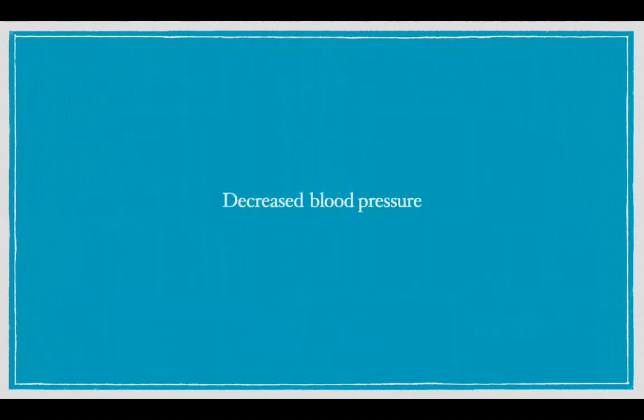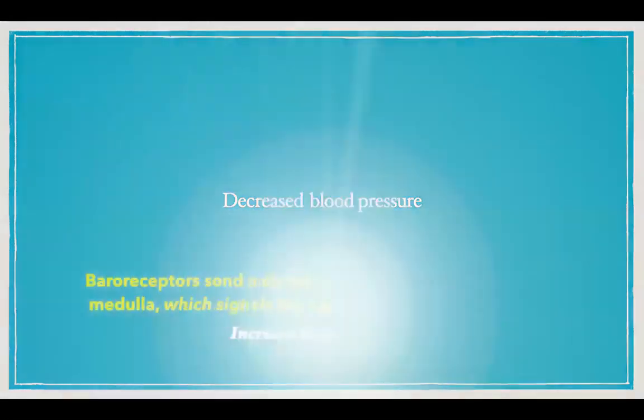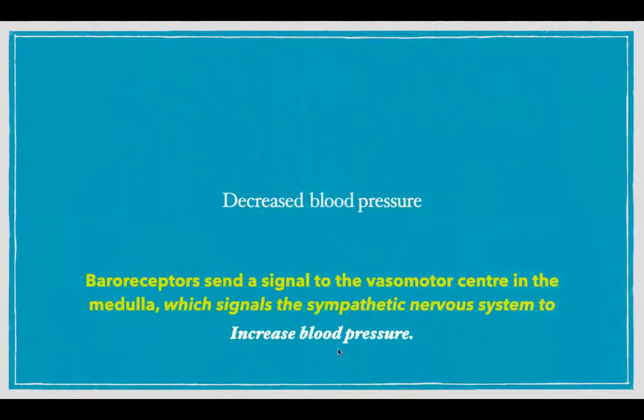When the blood pressure decreases, the baroreceptors send a signal to the nucleus tractus solitarius telling it that the blood pressure has decreased. The nucleus tractus solitarius then stimulates the rostral medulla, which stimulates the sympathetic nervous system and brings the blood pressure back towards normal.